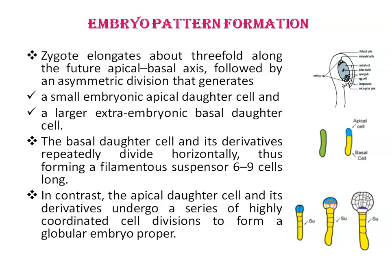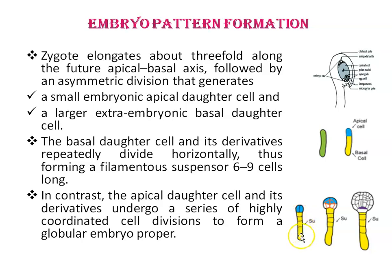After fertilization, a zygote is formed. This zygote then elongates about threefold along the future apical-basal axis, followed by an asymmetric division that generates a small embryonic apical daughter cell and a larger extra-embryonic basal daughter cell. The basal daughter cell and its derivatives repeatedly divide horizontally, thus forming a filamentous suspensor of six to nine cells long.